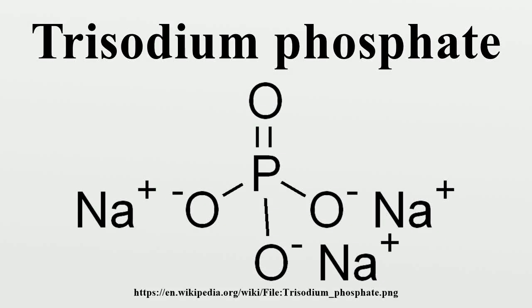Trisodium phosphate is the inorganic compound with the chemical formula Na₃PO₄. It is a white, granular or crystalline solid, highly soluble in water, producing an alkaline solution.